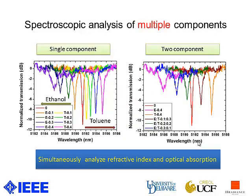Besides, as we discussed at the beginning of the talk, the on-chip cavity-enhanced spectroscopy not only gives you the absorption information, but also gives you the refractive index information simultaneously. This enables us the ability for spectroscopy to analyze multi-component chemical mixtures.